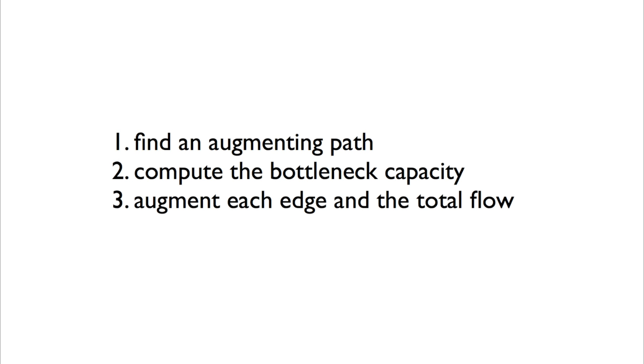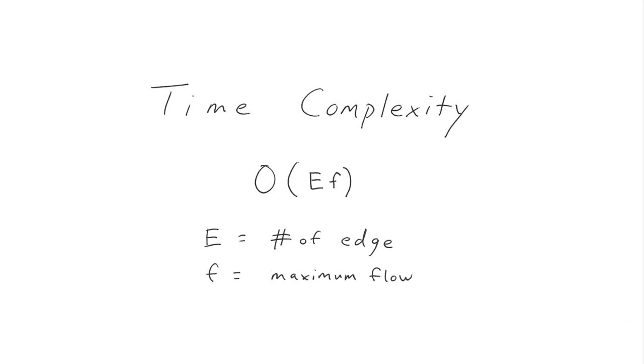I won't go into depth on the time complexity, but just think that at each iteration you'll need to do a depth first search, which has a complexity of big O of E. In addition, the maximum number of iterations is the total flow value. This will happen if you only update the flow by a value of 1 each time. This gives us a complexity of big O of E times F.